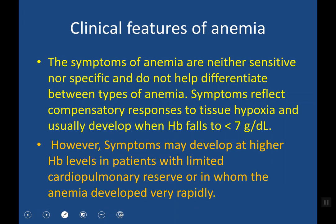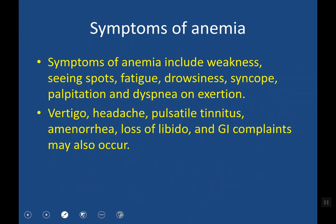Clinical features of anemia depend on the severity of anemia and the rate of its development. Generally, symptoms occur when the hemoglobin level drops below 7 g/dL, but in patients with rapidly developing anemia such as acute blood loss, symptoms might occur even at levels of 9–10 g/dL. Associated conditions like cardiac or respiratory disease may cause symptoms to appear earlier. Symptoms of anemia include weakness, easy fatigue, drowsiness, headache, vertigo, and tinnitus. In severe cases, patients may develop palpitation, dyspnea, or even syncope — which means transient loss of consciousness.